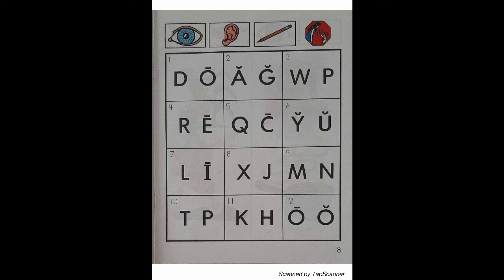Look at the letters in box 7. Listen as I say the sound of the letter. L — Lizard — L. With your pencil, circle the letter that reads L.